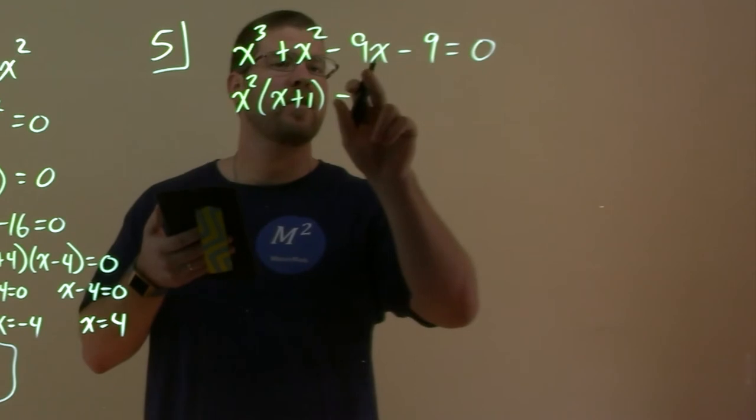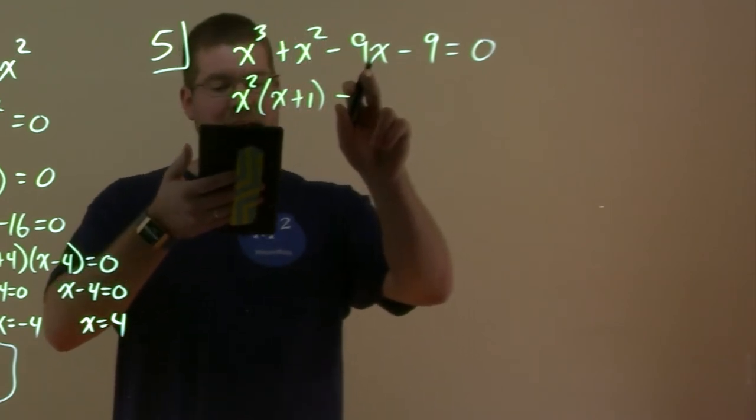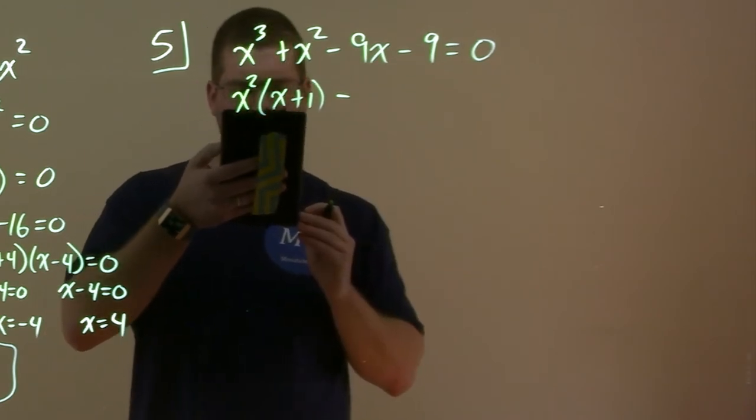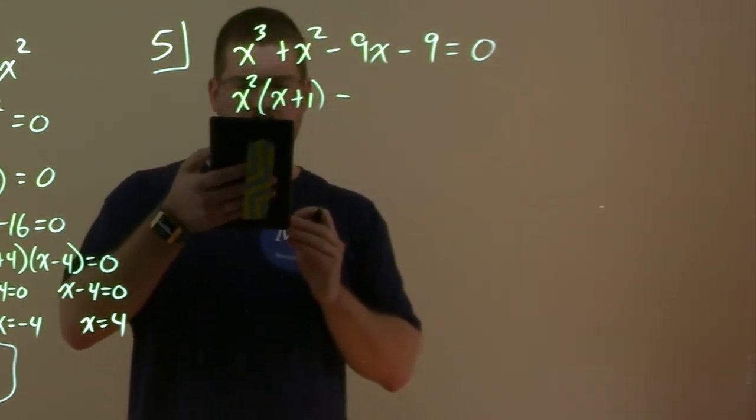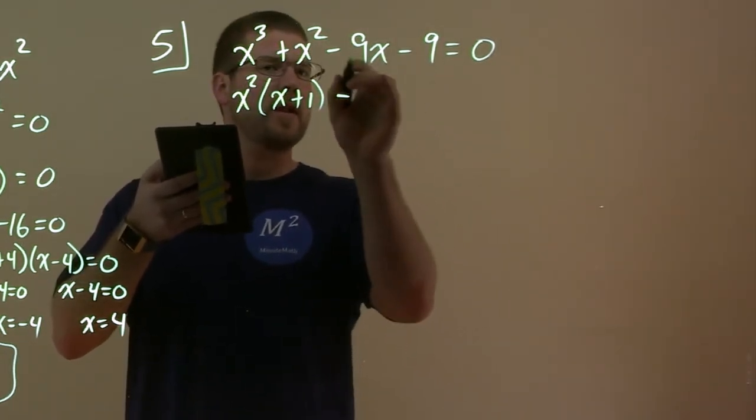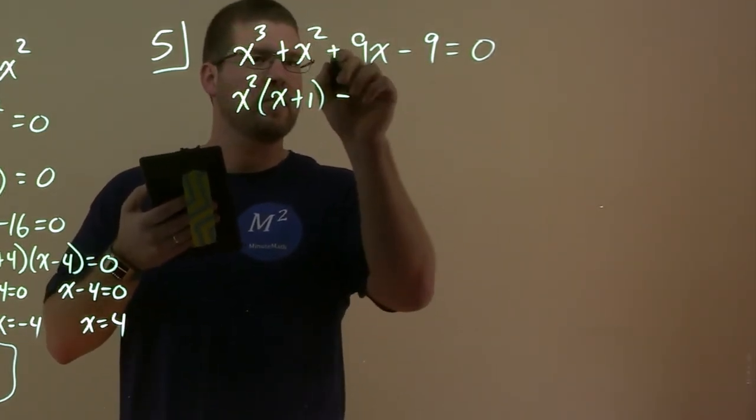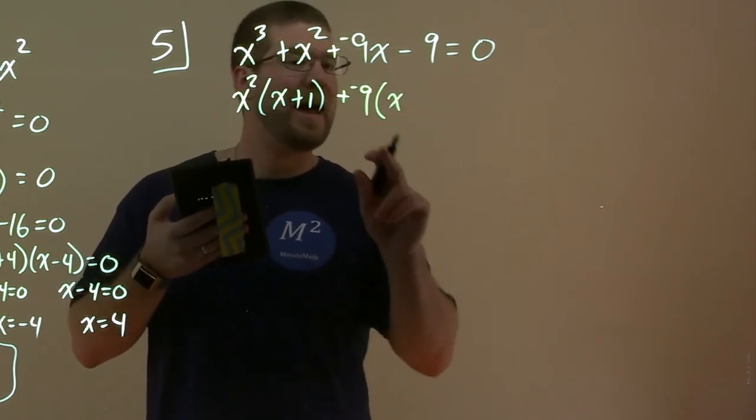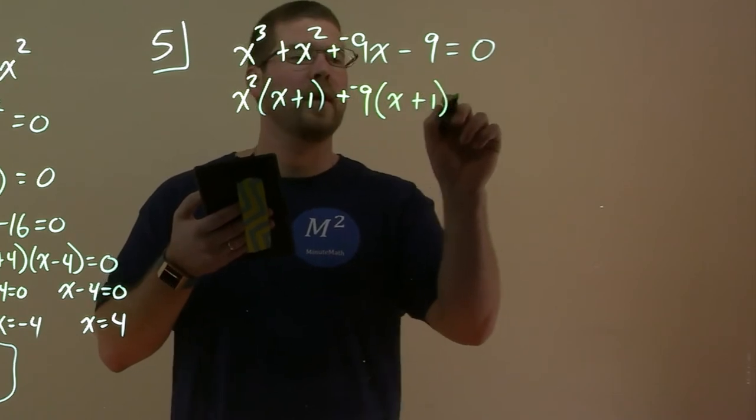We see a 9 in both of these. So if we pull out a 9, right? Pull out a 9 or actually, what am I pulling out here? Do you want to pull out a 9 or a negative 9? I think I'm pulling out a negative 9. If I pull out a negative 9, alright, so I pull out a, so this is like, if you want to see it like this, we have a minus 9 like this, right? So we pull out a negative 9, we're left with a positive x here and then a positive 1 here.